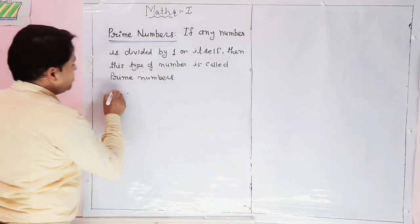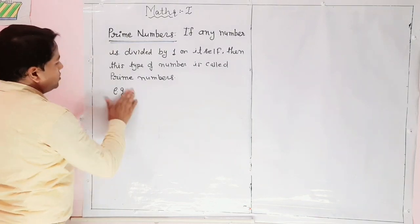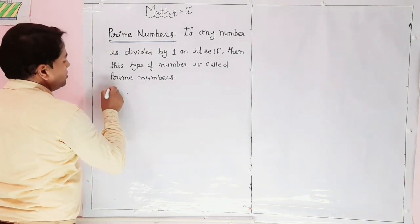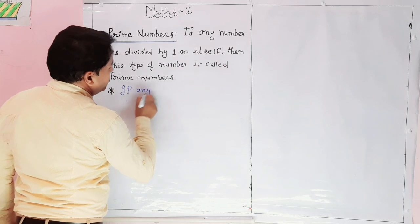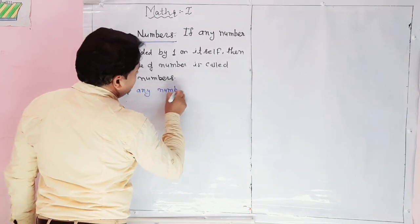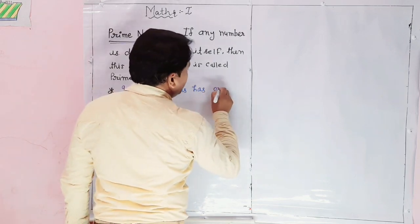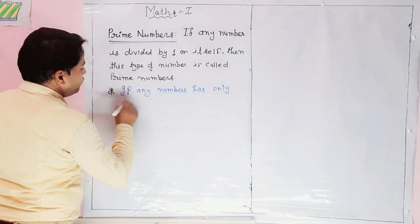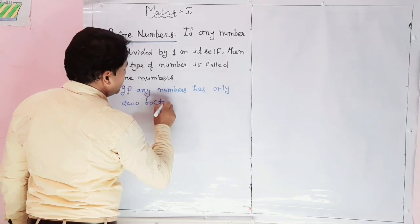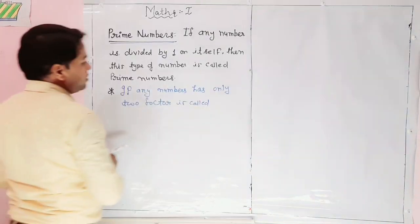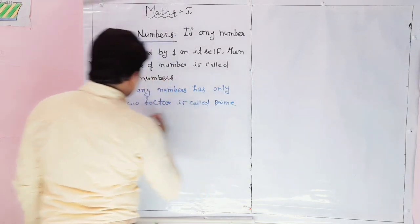For example, this will be the second definition. If any number has only two factors, it is called prime numbers.